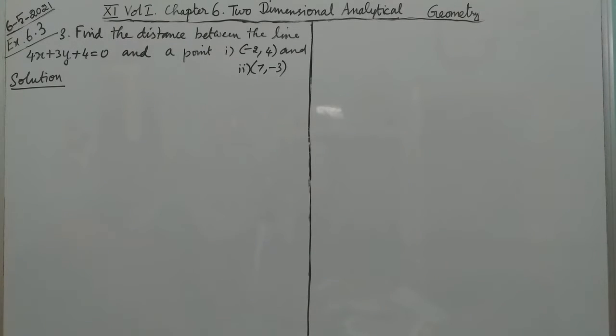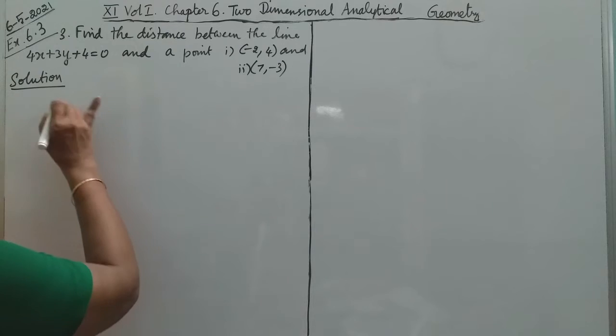Hello students, I am going to do exercise 6.3 problem number 3: Find the distance between the line 4x plus 3y plus 4 equals 0 and a point.